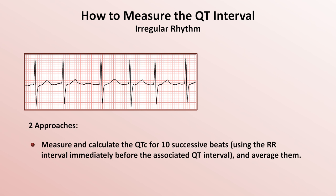I wanted to specifically show you an example of the QT prolongation caused by hypocalcemia, since there is something unique about it. Unlike other causes of QT prolongation in which the QT is prolonged largely because the T wave itself is unusually prolonged, in hypocalcemia it's a prolonged ST segment that's the cause of the QT prolongation. The T wave itself looks completely normal. So if you ever see a patient with QT prolongation but normal looking T waves, check the serum calcium.